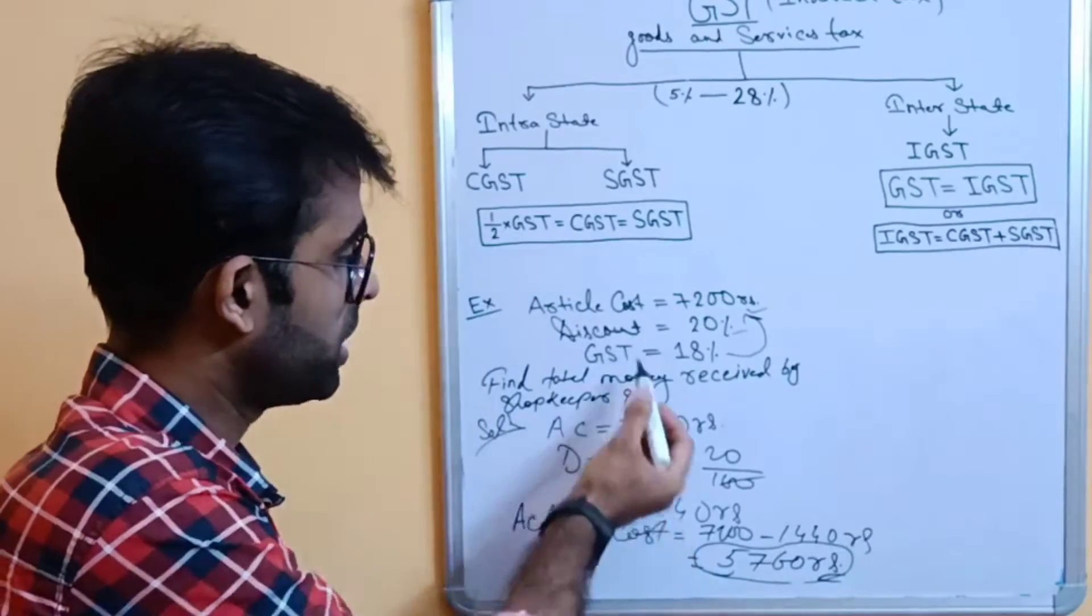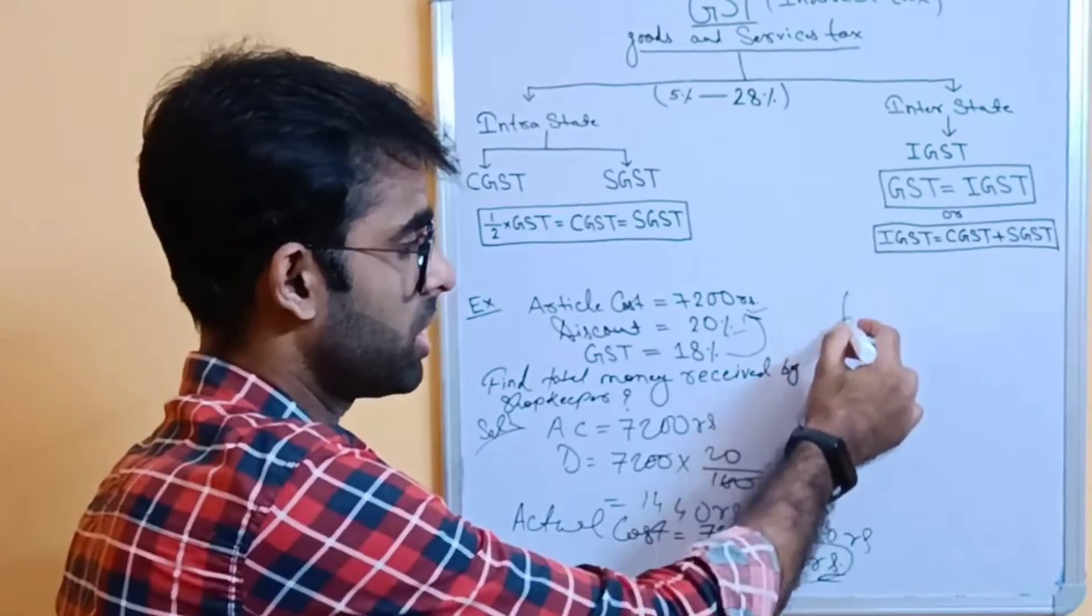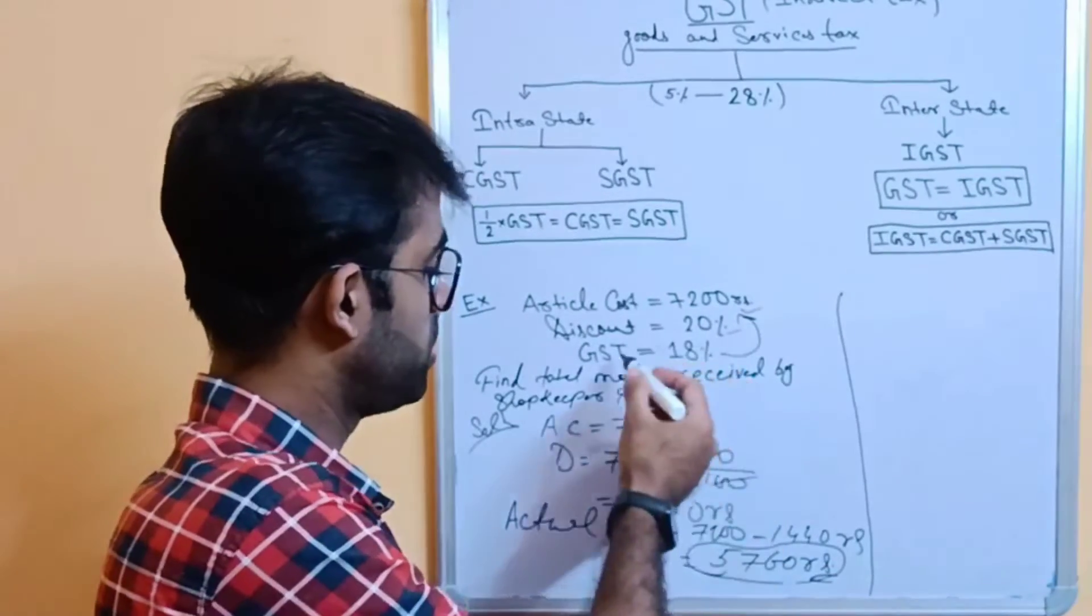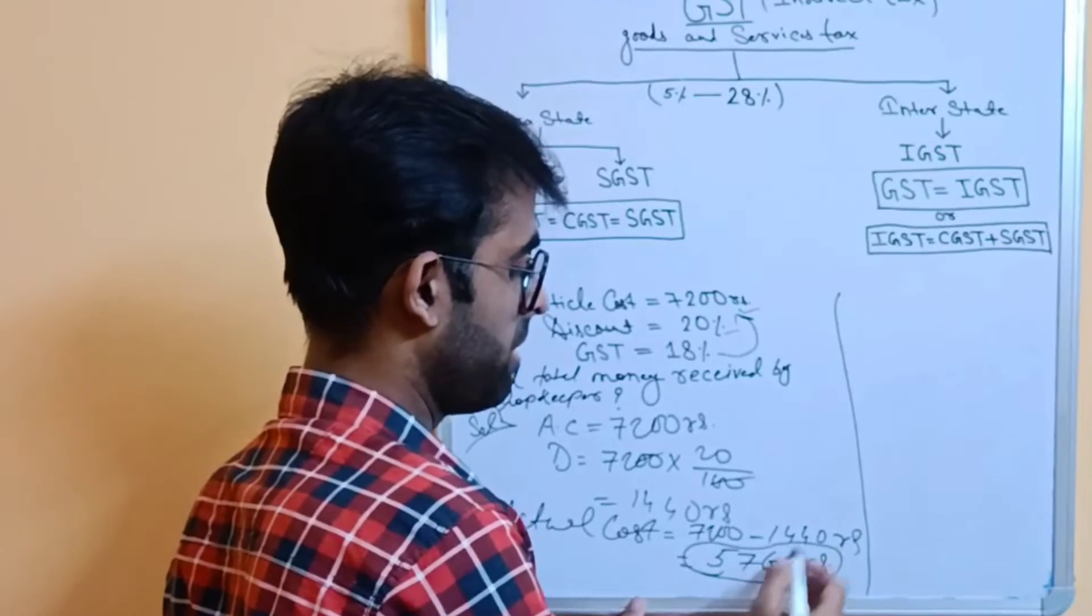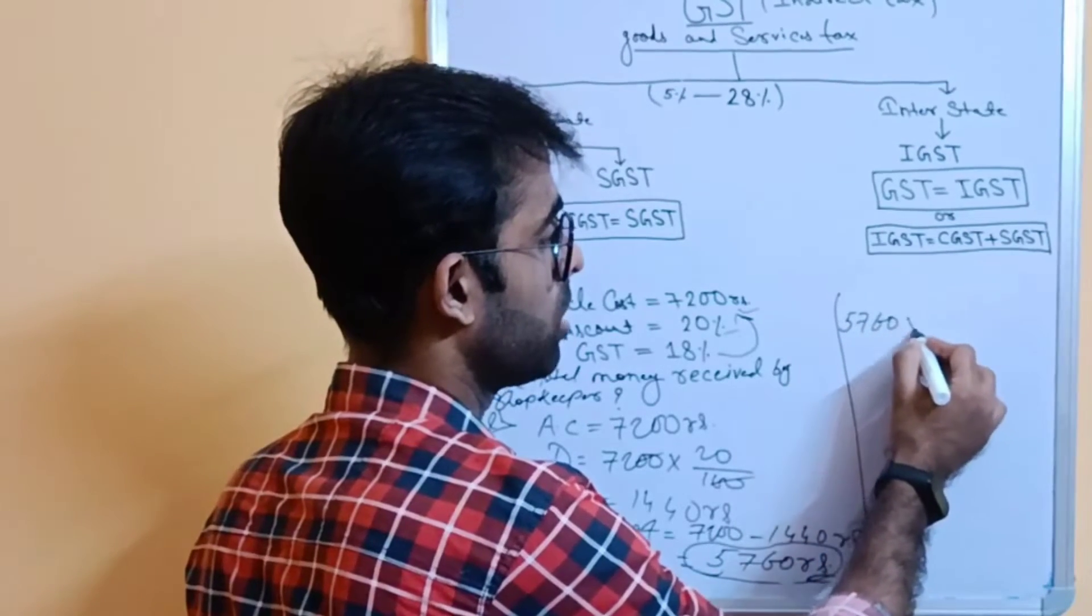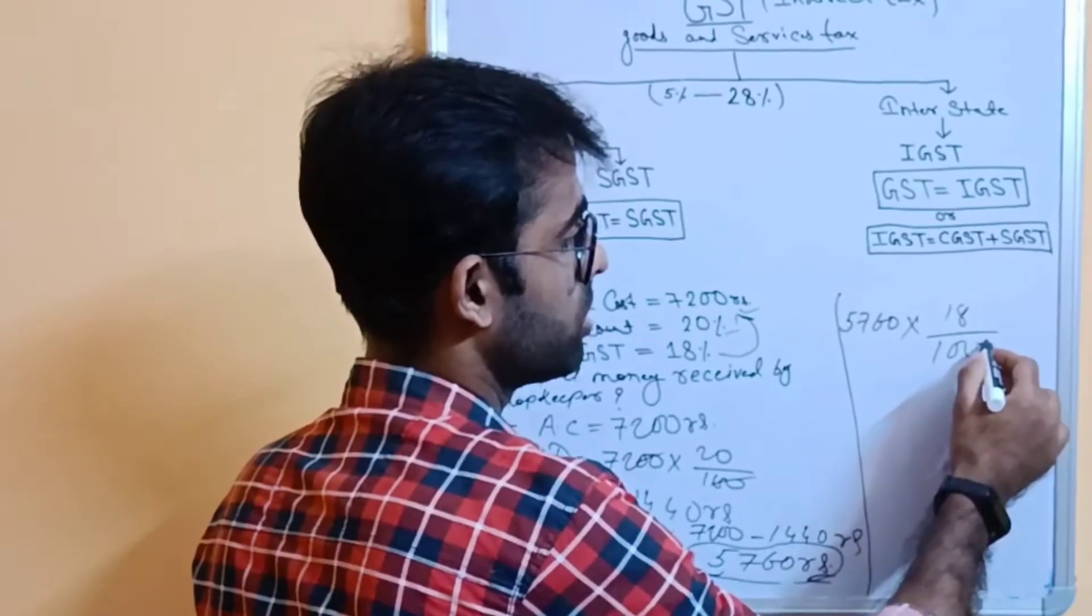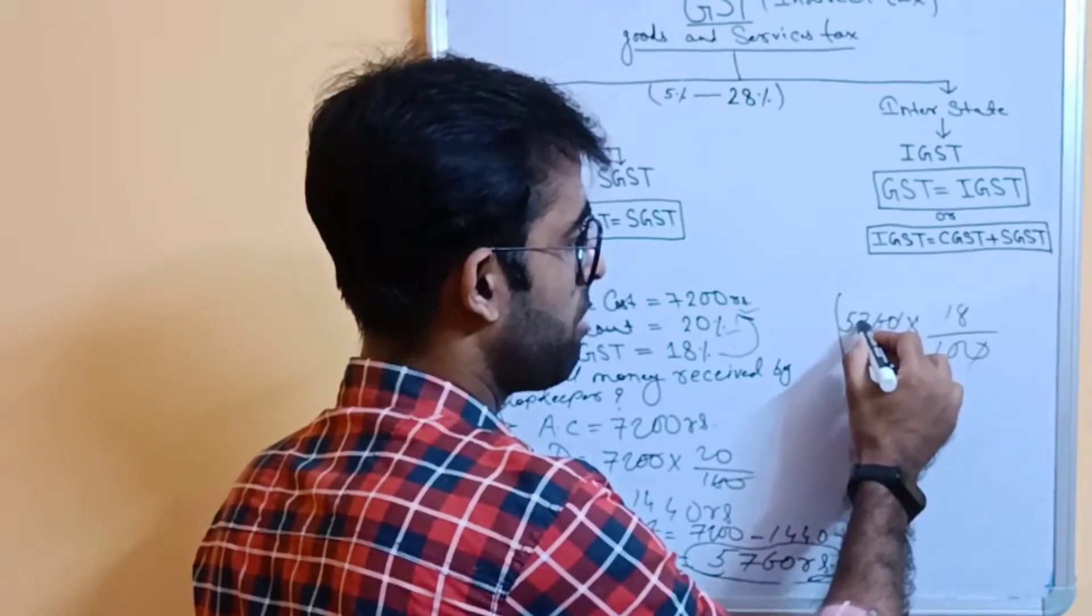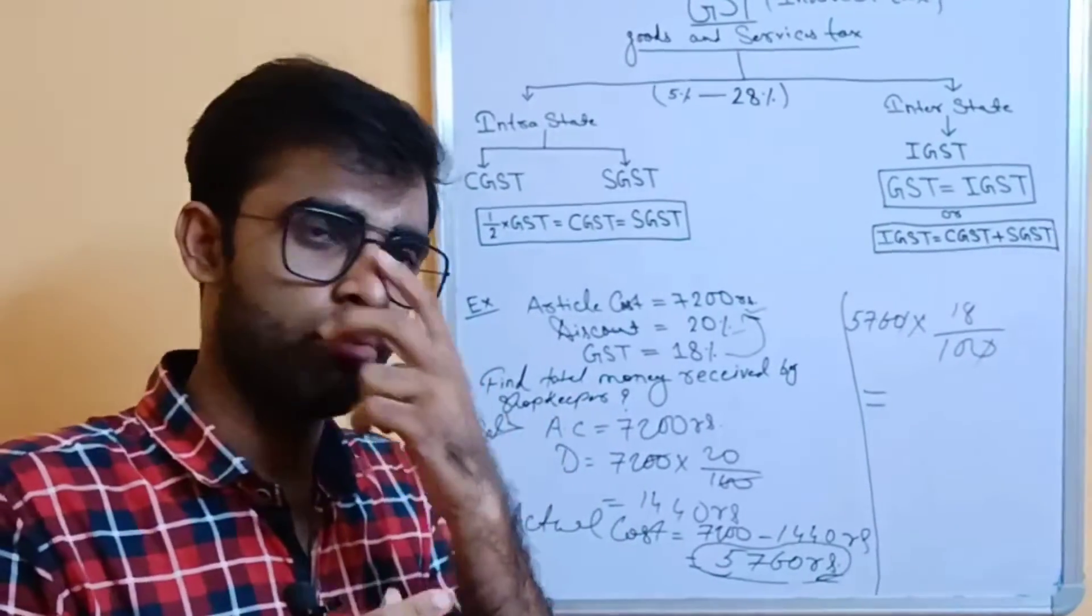So, the actual cost of this item will be 5760 rupees. After that, we have to pay 18% GST for this amount. So, calculate 18% of 5760. If we calculate 576 into 18 divided by 10, your final answer will be...